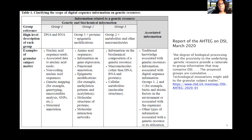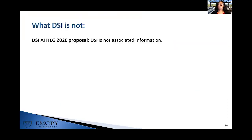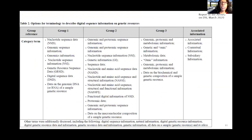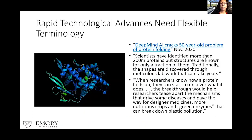Decision 14/20 also established a science and policy-based process and commissioned four studies on various aspects of DSI. The first study on concept and scope was very helpful in laying out the flow of information that comes from genetic resources and could possibly comprise DSI. The 2020 OEWG created groups of information starting narrowly with DNA and RNA, expanding to proteins and epigenetic modifications, then to metabolites and other macromolecules — all possibly comprised within DSI based on their relationship to the underlying genetic resource.